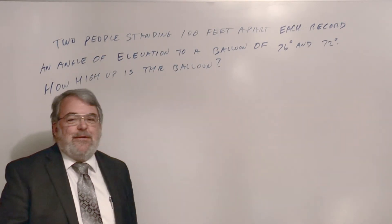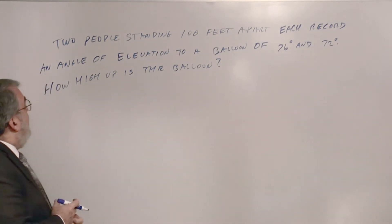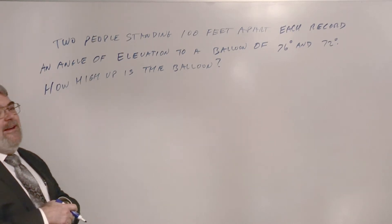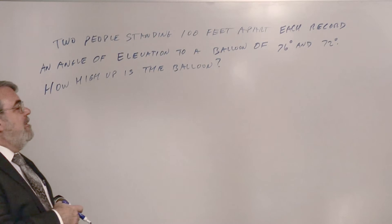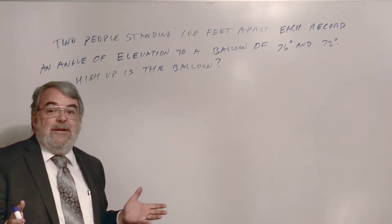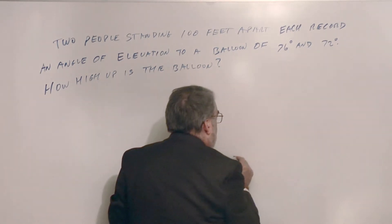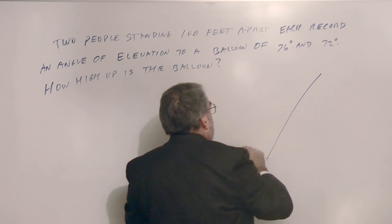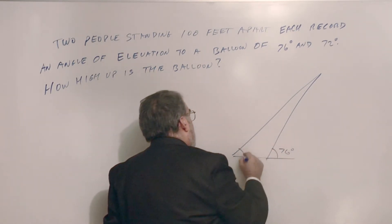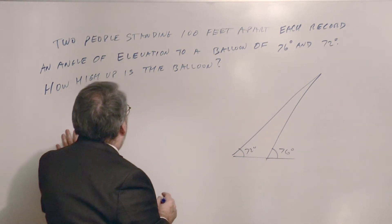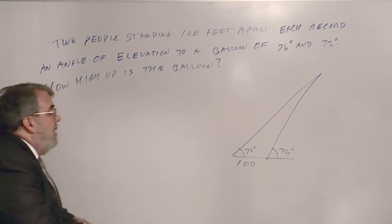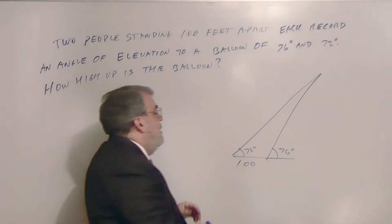Another Law of Sines example. Two people standing 100 feet apart each record an angle of elevation to a balloon: 76 degrees and 72 degrees. How high up is the balloon? Pause the video, draw the picture. They're 100 feet apart, and here are my angles of elevation — 76 degrees for the closer observer, 72 degrees for the other. I want to know the height H. First I need to figure out one of these two sides.